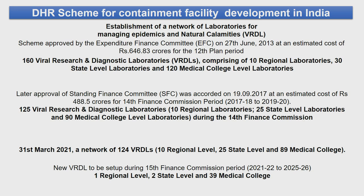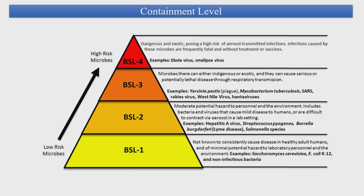By 31st March 2021, around 120 VRDLs had been established, of which 10 are regional VRDLs — including one regional VRDL at AIIMS Jodhpur — along with 25 state-level and 89 medical college-level VRDLs. The 15th Finance Commission has given its assent for one additional regional-level, two state-level, and 29 medical college-level VRDLs. Coming to the containment facilities, there are four biosafety levels: BSL-1, BSL-2, BSL-3, and BSL-4.